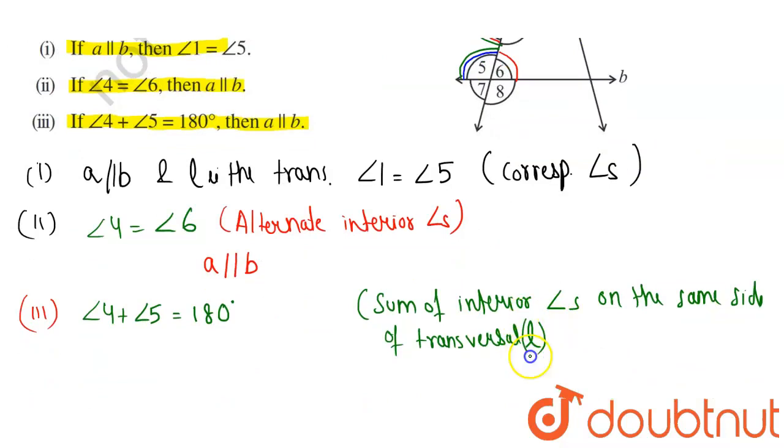The sum of interior angles on the same side of transversal l is 180 degrees. If this condition holds, then a is parallel to b. This completes our solution.